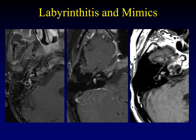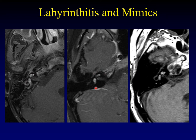Let me put those last three diagnoses on one slide because they look so much alike — a teaching approach my mentor in head and neck imaging, Jane Weissman, loved to use, putting mimics side by side. This is the acute phase of labyrinthitis ossificans — inflammatory enhancement all through the membranous labyrinth. This next one is a schwannoma that hasn't yet had an opportunity to expand the otic capsule, but it looks just like the labyrinthitis. And this is an unenhanced scan with intrinsic bright T1 signal from hemorrhage. Labyrinthitis, schwannoma, hemorrhage — all looking a lot alike.